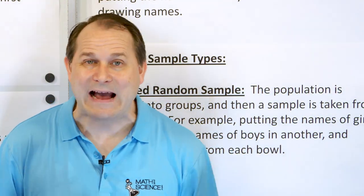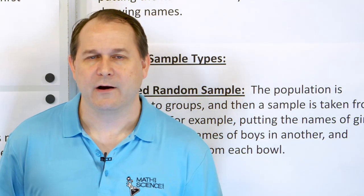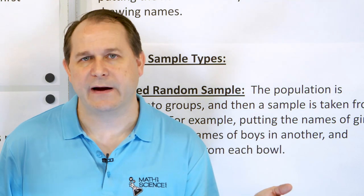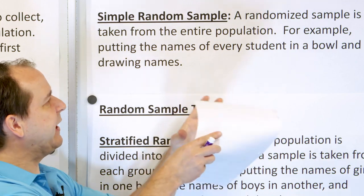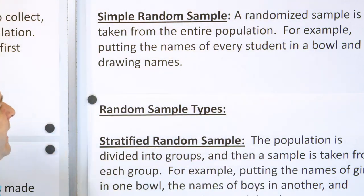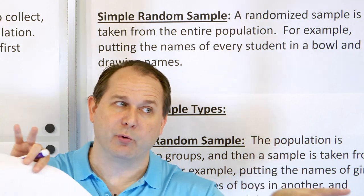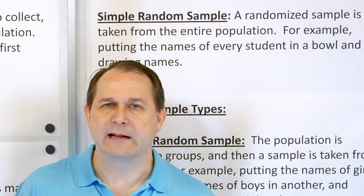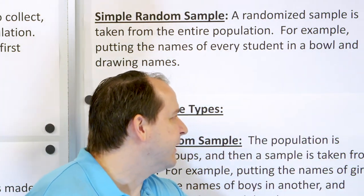Which one is better depends on what you're studying. We're not trying to decide which is best — we're trying to understand and identify the differences. Simple random: put everybody in a bucket, shake it up, start drawing names. Stratified: separate your population into groupings like boys and girls, different age groups, and do sampling on those different groups.